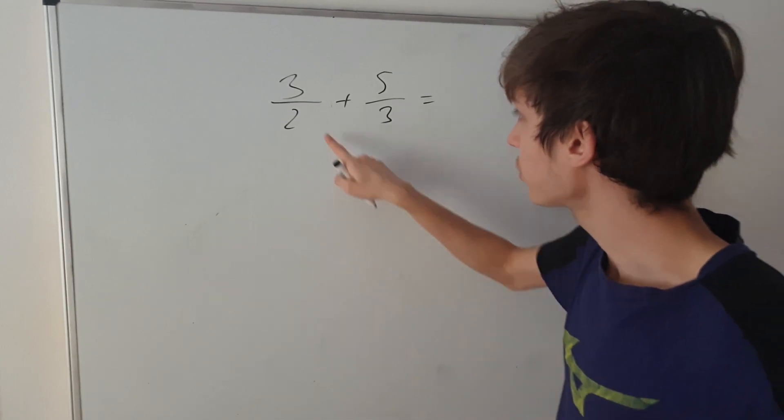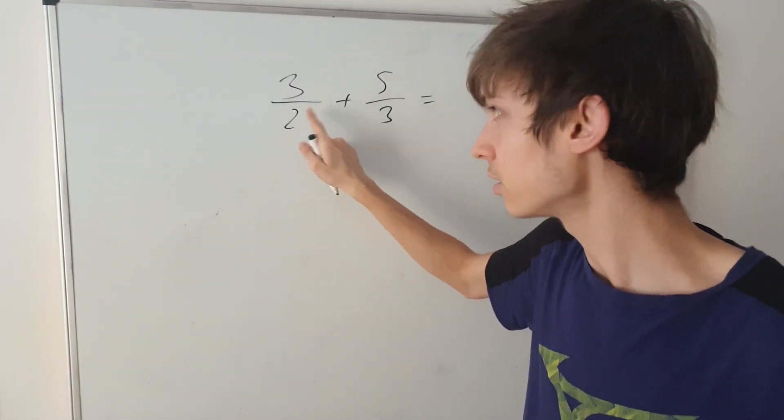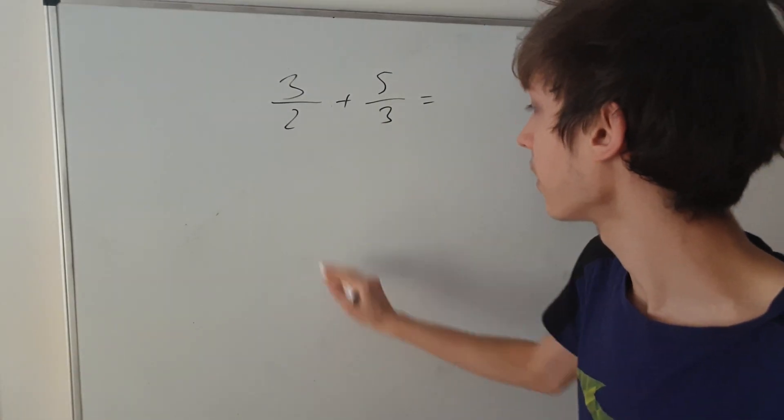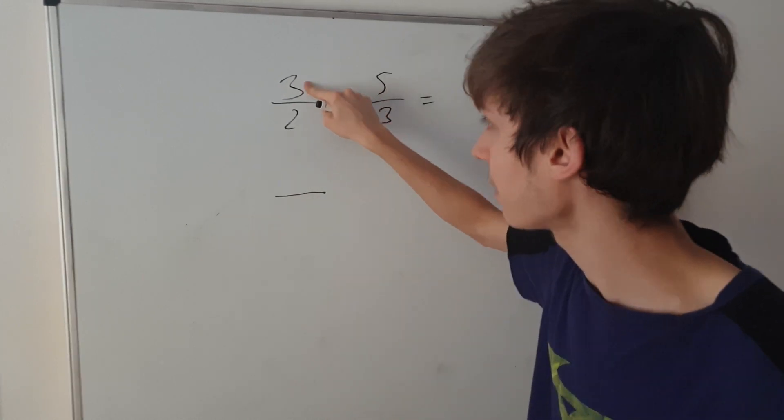So, how do we do that? Well, I think what we need to get in both cases is 6 in the bottom, okay? 6 in the bottom. So, how do we achieve that? Well, to get 6 out of 2, we have to multiply by 3. So, that means you also have to multiply by 3 in the 3.